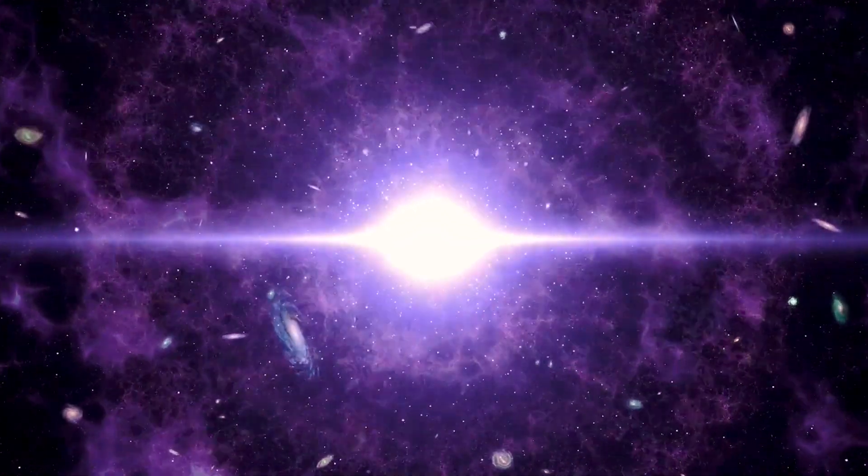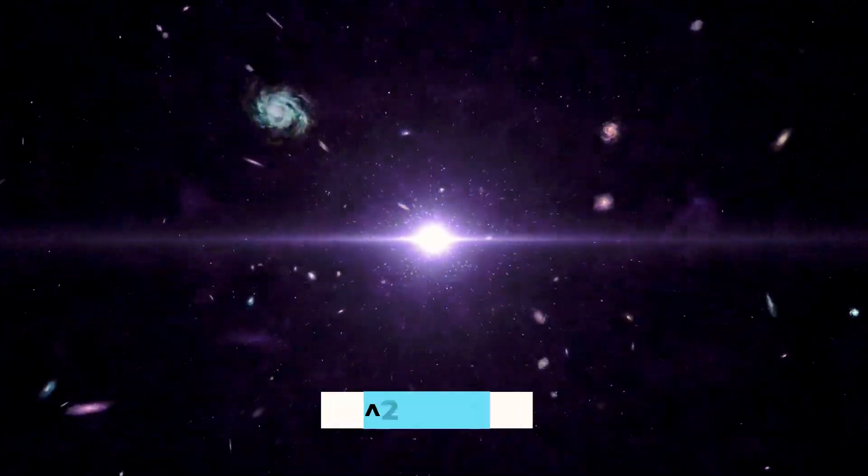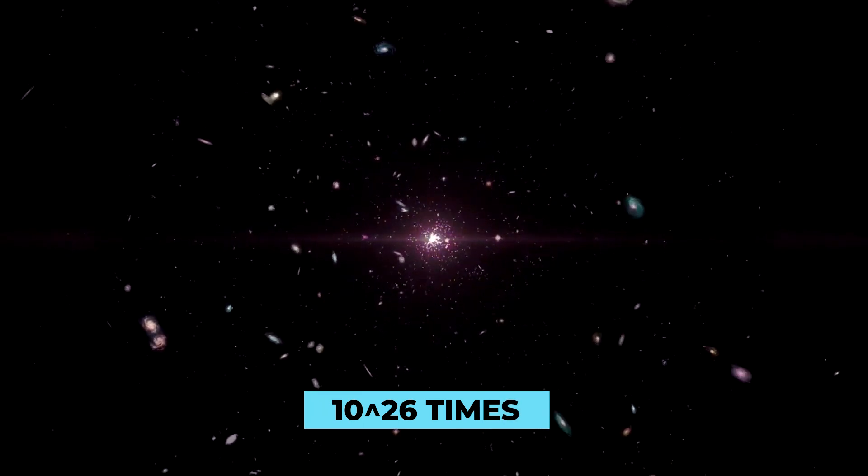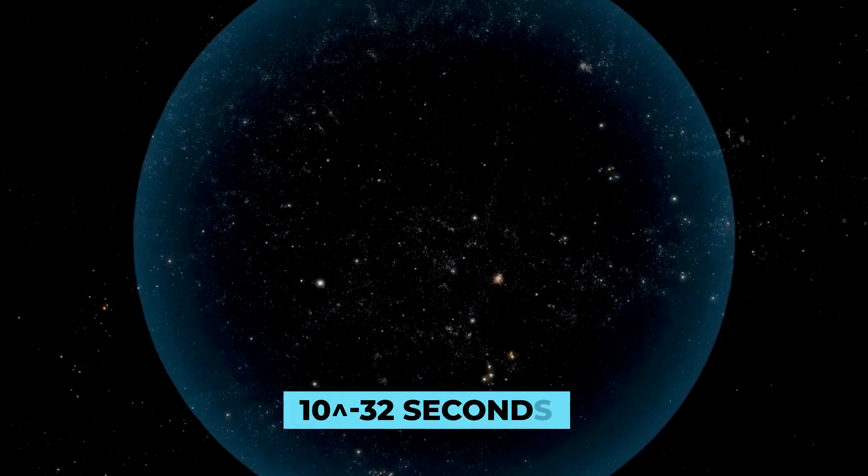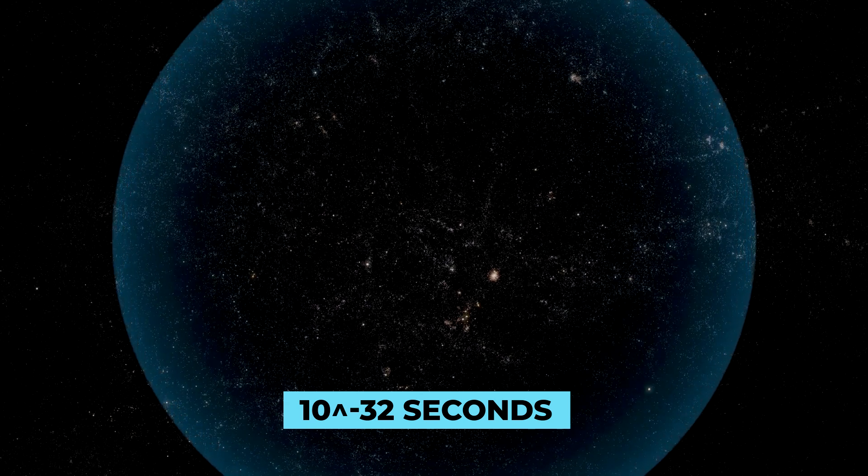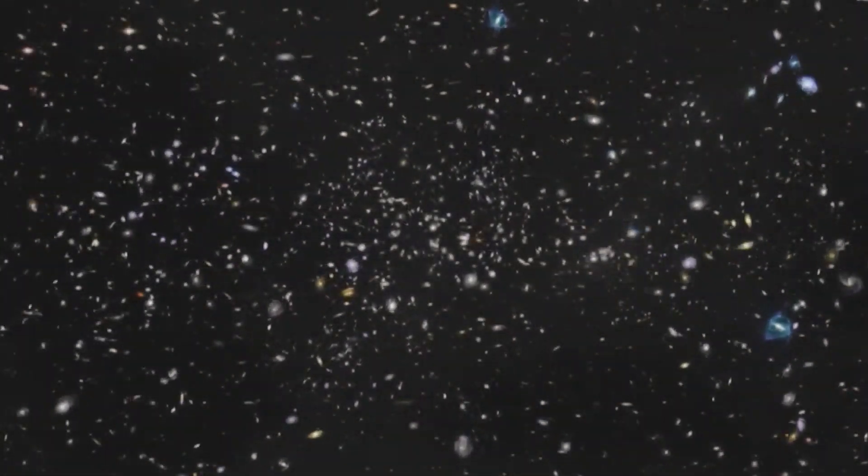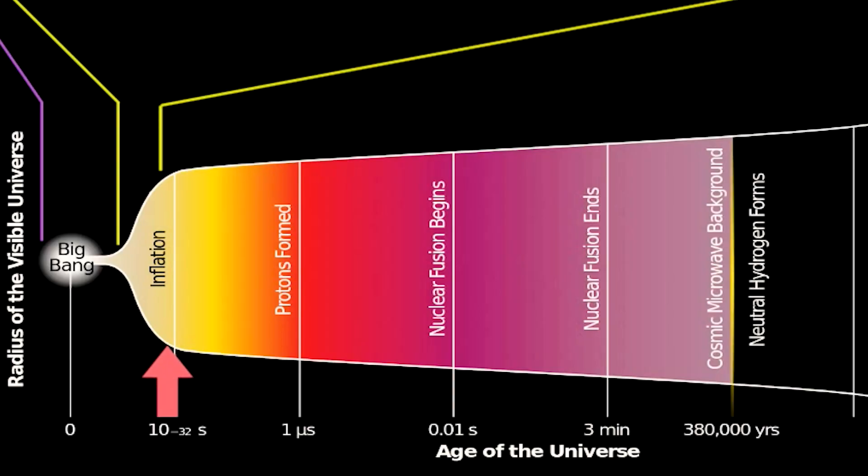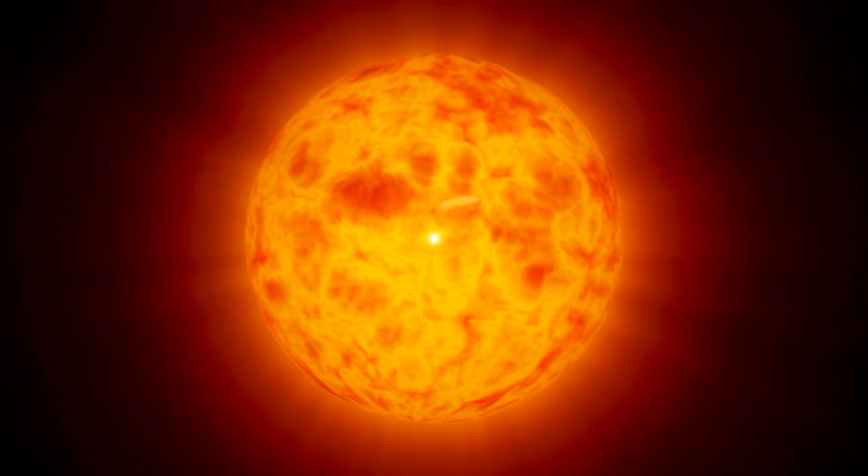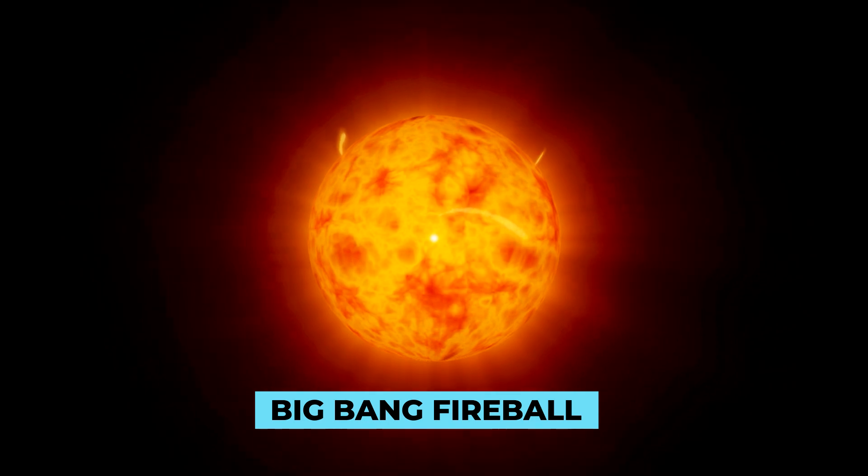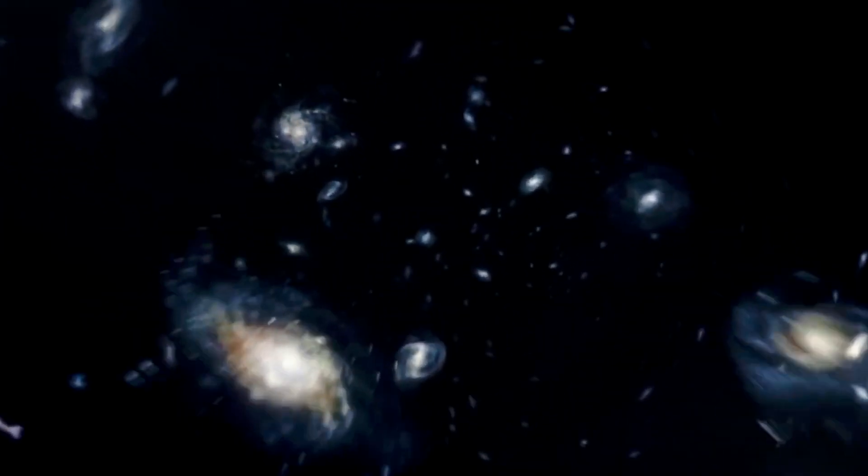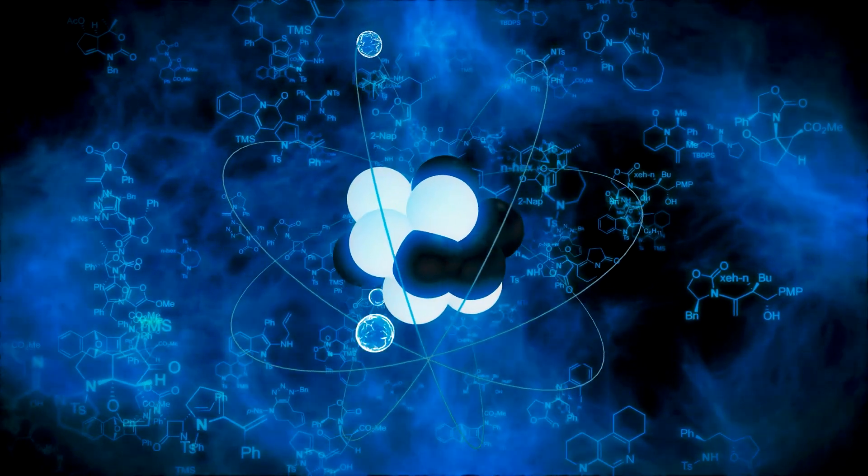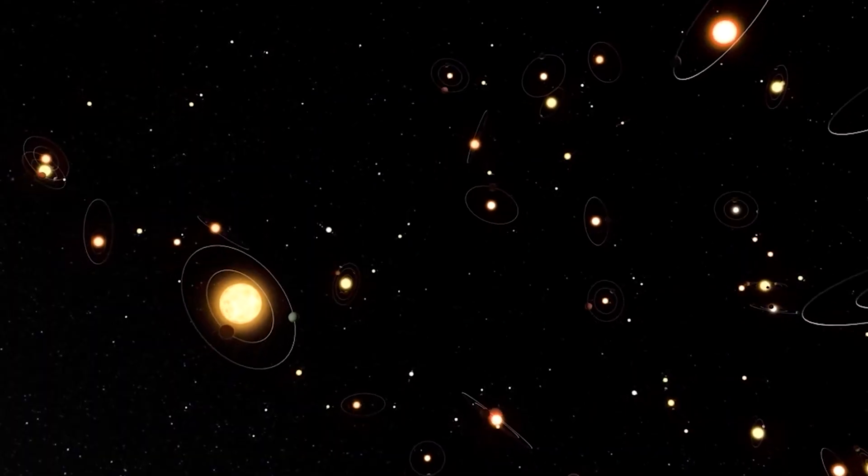Inflation caused the cosmos to expand to 10 to the 26 power times its original size in less than 10 to the negative 32 power seconds. After all this inflation, before the real expansion of matter that we commonly think of as the Big Bang itself, inflation slowed, and a flood of matter and radiation formed, producing the iconic Big Bang fireball and giving rise to the building blocks of the universe: the atoms, molecules, stars and galaxies.